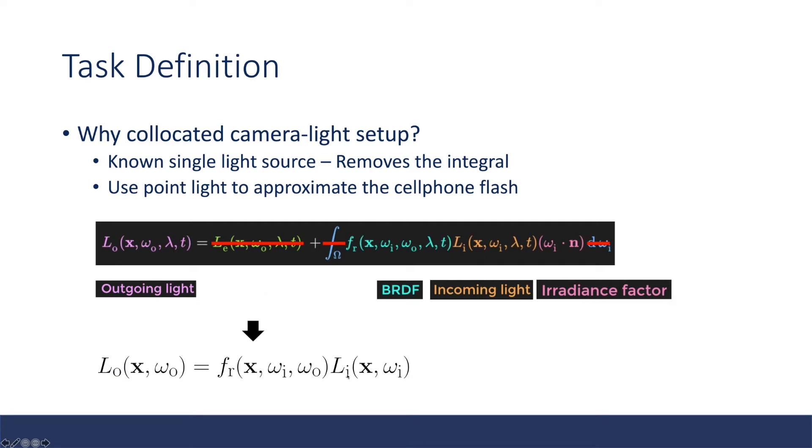This rendering equation can be simplified. The outgoing light is just the BRDF times incoming light. I'm just omitting this irradiance factor.